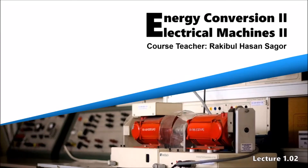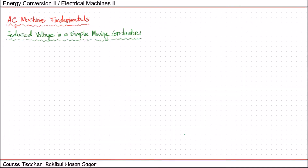Let's get started from the topic where we ended in the previous class. In the last class we were discussing about AC machines fundamentals and we were discussing an induced voltage in a simple moving conductor if it is placed under a magnetic field.